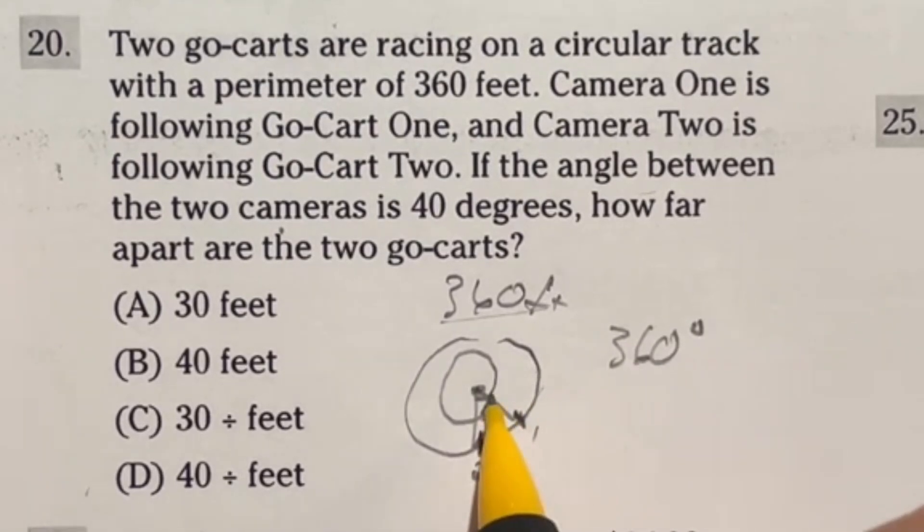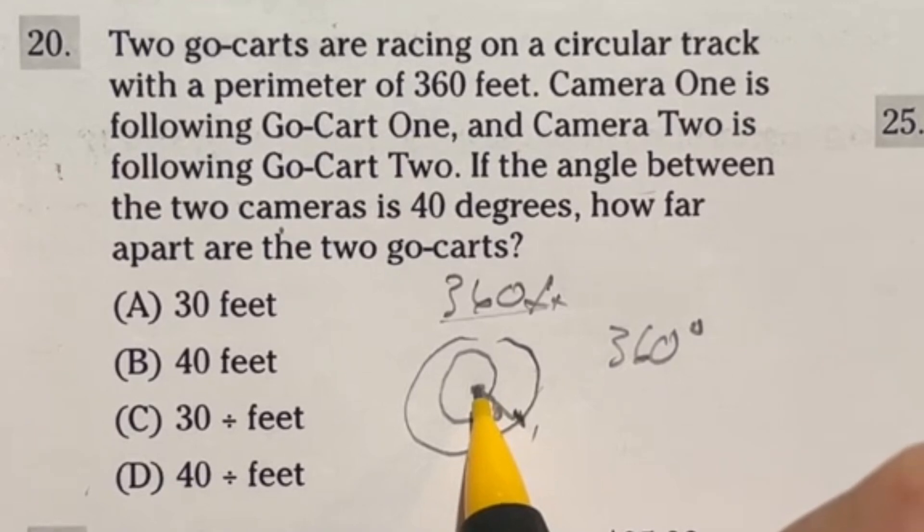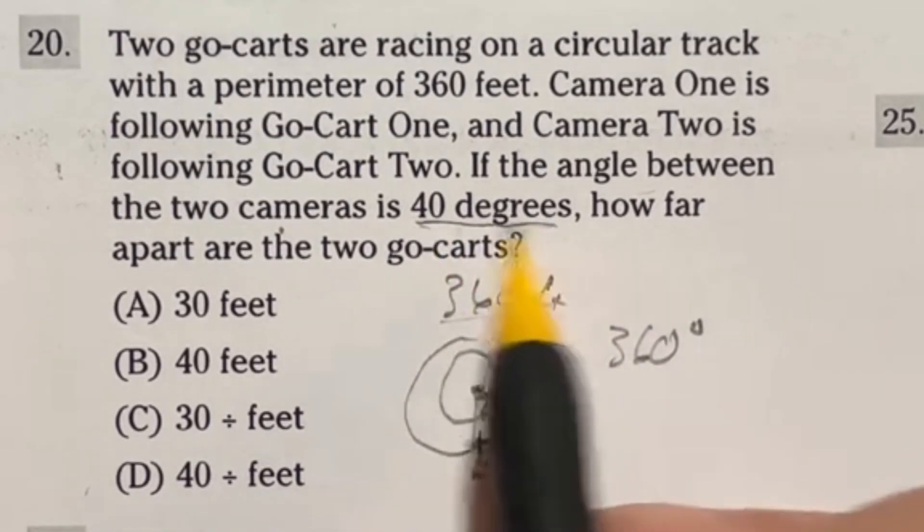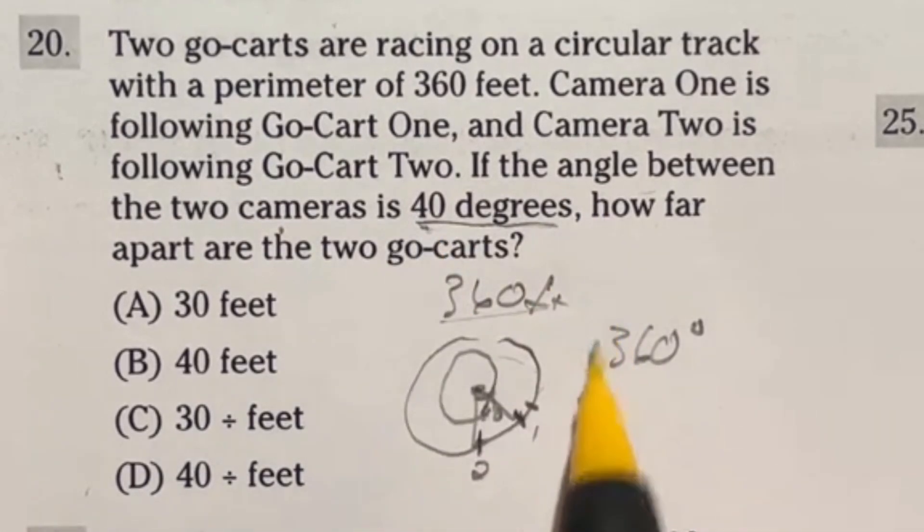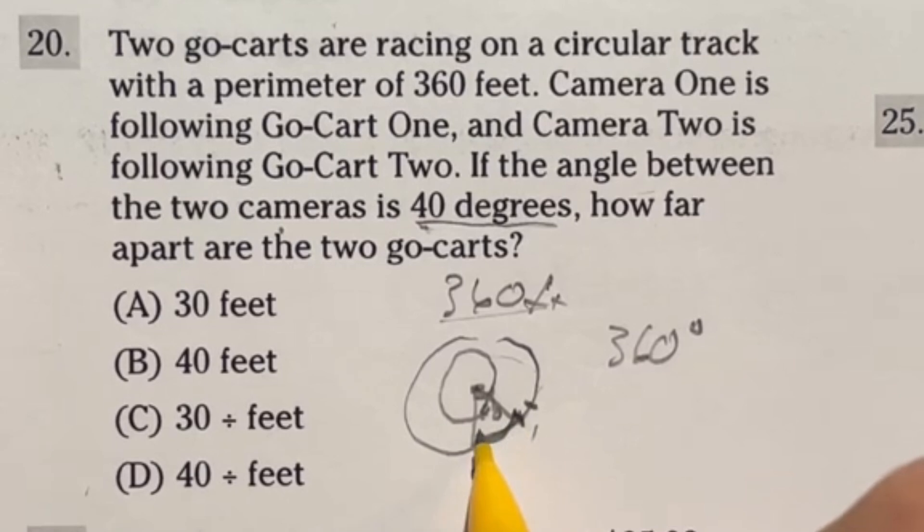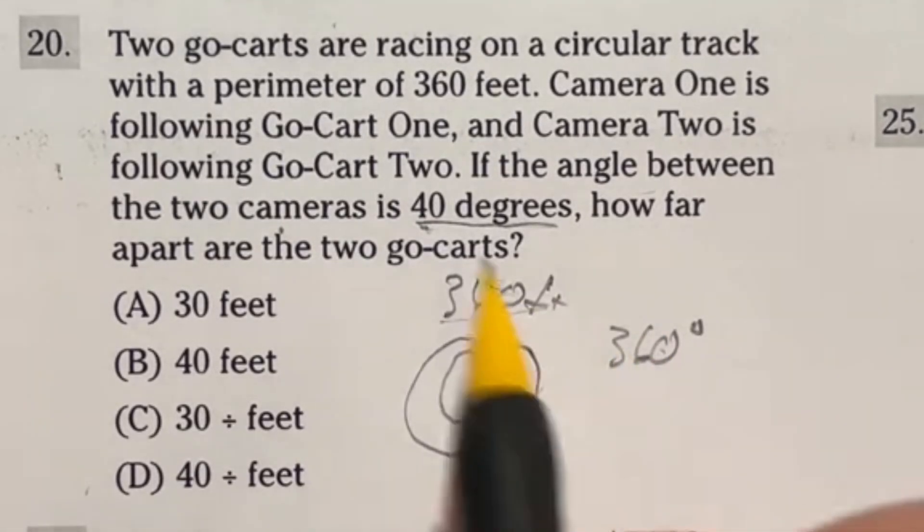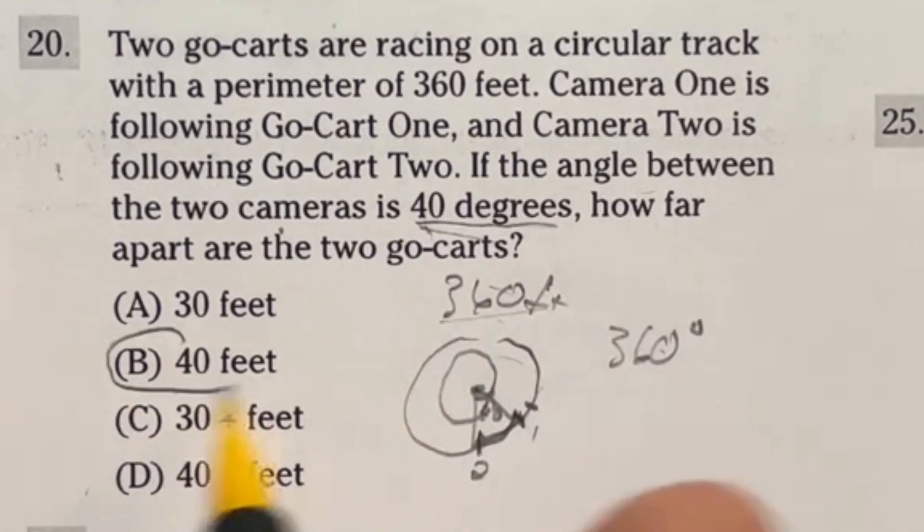Because of that, that means that for every one degree you move or rotate, it's going to be one foot of the perimeter around this circle. So if I'm going one foot per degree and we're going 40 degrees, then that means I'm just going 40 feet. Because the 360s match, our final answer here is going to be 40 feet, answer B.